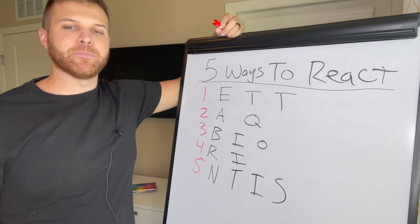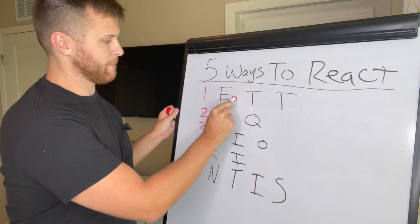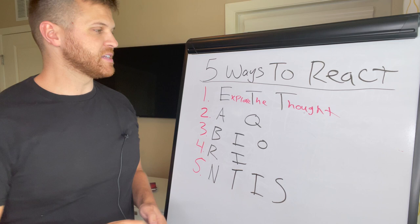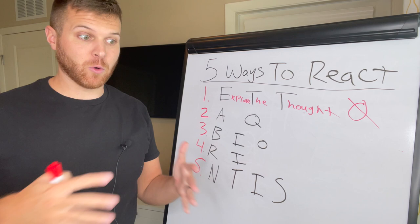Okay, we're ready? Five ways that people react to a retroactive jealousy thought. Okay, the first one is when the thought comes up, doesn't feel good. Explore the thought. Thought exploration. Again, this is a no-no. This is what we don't want to do. Because again, the more we do this, the more focus and attention we put on these thoughts, the more they grow.